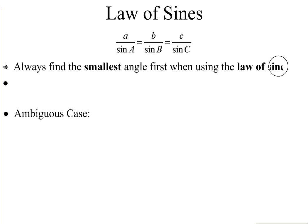One rule when using the Law of Sines: if possible, always find the smallest angle first. You'll see why as we go through the next couple of days, along with when we talk about Law of Cosines, why we want to do that.